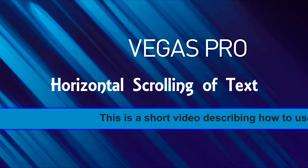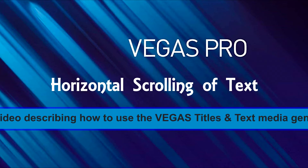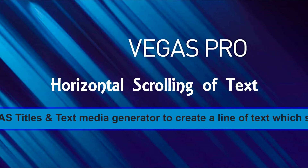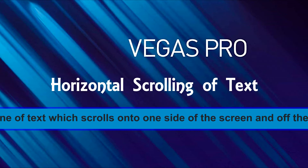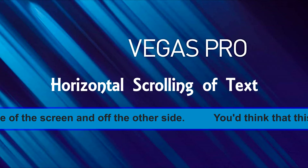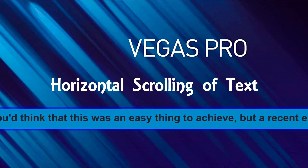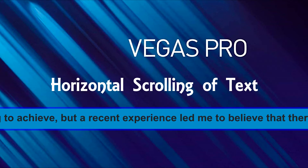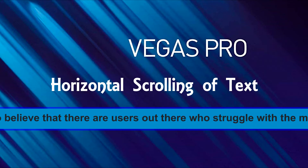This is a short video describing how to use the Vegas Titles and Text Media Generator to create a line of text which scrolls onto one side of the screen and off the other side. You'd think that this was an easy thing to achieve, but a recent experience led me to believe that there are users out there who struggle with the mechanism involved.